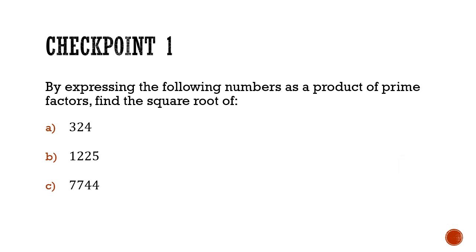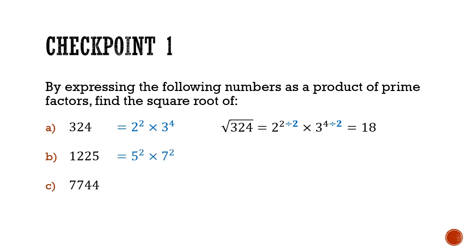Let's go through the answers. For part a, the prime factorization gives us 2 squared times 3 to the power of 4. When we square root this, we divide the indices by 2, giving 2 to the power of 1 times 3 squared, which is 18. For part b, the prime factorization is 5 squared times 7 squared; dividing indices by 2 gives 5 times 7, which is 35. For part c, the prime factorization is 2 to the power of 6 times 11 squared, so the square root is 88.